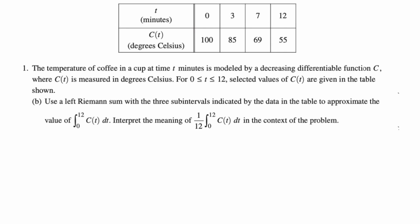All right, B says, use a left Riemann sum with three subintervals indicated by the data in the table to approximate the value of the integral from 0 to 12, C(t) dt. Then we have to interpret the meaning of 1 over 12, the integral from 0 to 12, C(t) dt, in the context of the problem.